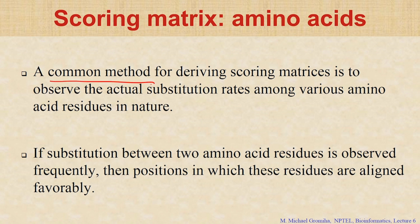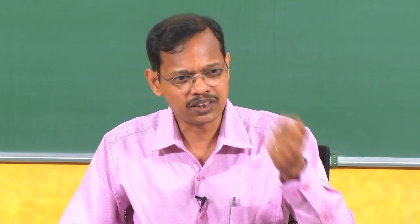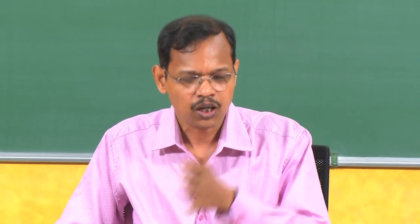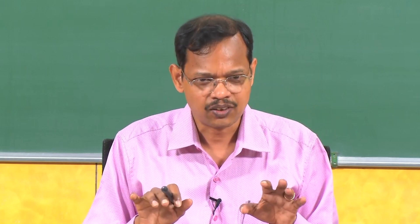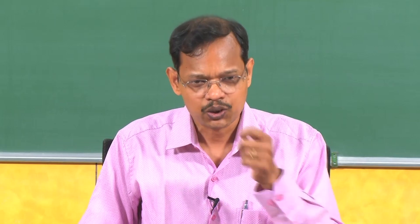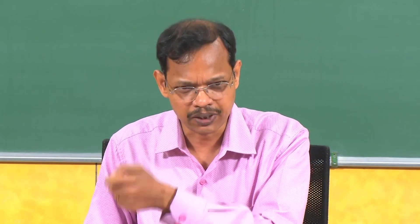The common method to derive scoring matrices is to check actual substitution rates. For example, take hemoglobin sequences, align them, and see what is the actual rate — how many times alanine is mutated to valine, how many times alanine is mutated to aspartic acid. Take the real ones and from these real cases derive the matrices: what is the probability of a specific residue A being mutated to residue B. Based on that, they derive the matrix — this is called the scoring matrix.